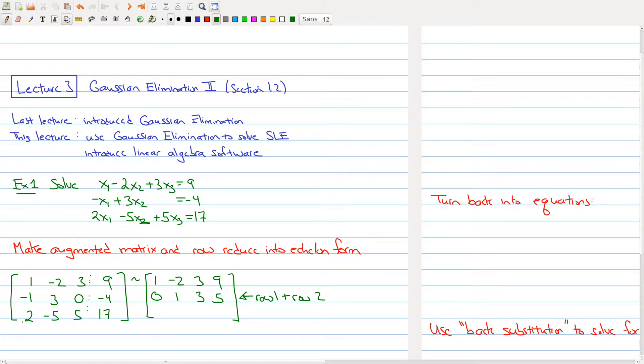Now I want to get rid of this 2. How do I get rid of this 2? Well, the way I can do that is multiply this 1 by minus 2 and add it to 2. So really I want to do row 1 times minus 2 and add it to row 3. So let's keep track of this. Minus 2 times 1 plus 2 is 0. Minus 2 times negative 2 is 4, adding it to negative 5 gives me minus 1. Minus 2 times 3 is negative 6, add 5 gives me minus 1. Minus 2 times 9 is negative 18, plus 17 gives me minus 1. So that's the first step of my reduction in Gaussian elimination.